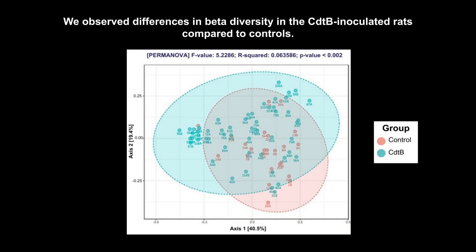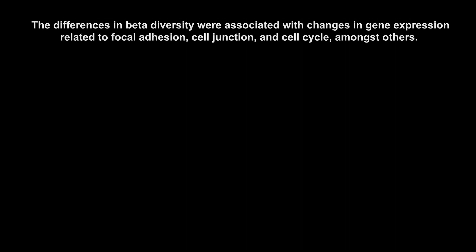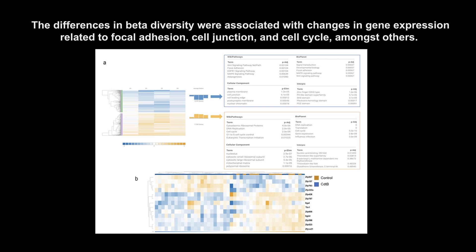We observed differences in beta diversity in the CDTB inoculated rats compared to controls. These differences in beta diversity were associated with changes in gene expression related to focal adhesion, cell junctions, and cell cycle, amongst others.